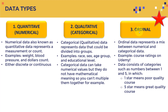The last category is what we call ordinal data, which represents a mix between numerical and categorical data. For example, Udemy course ratings consist of categories — numbers between one and five — but these categories actually have meaning behind them as well. One star means poor rating and five stars means great quality course. Think of it as a mix between quantitative and qualitative, combining both categories and meaningful numbers.